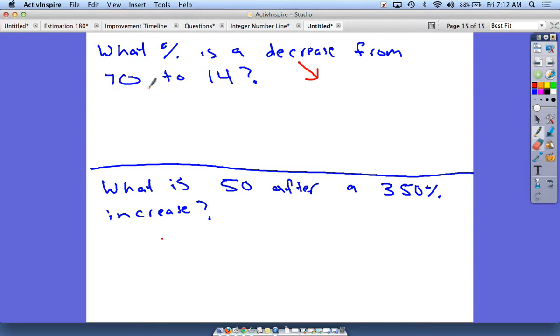70 to 14, that would be 70, 60, 56. So we're looking for 56. That's what we want to try to find because that's how much it actually decreases.